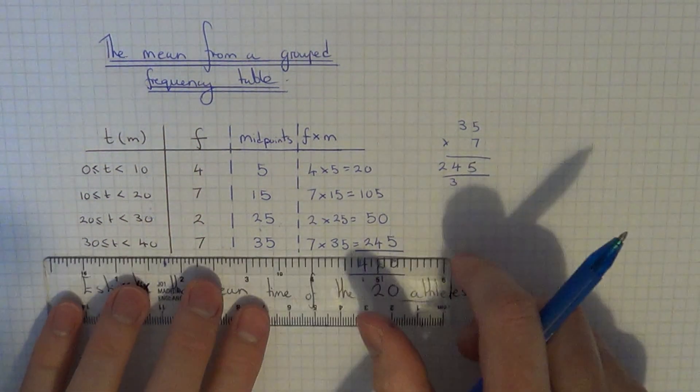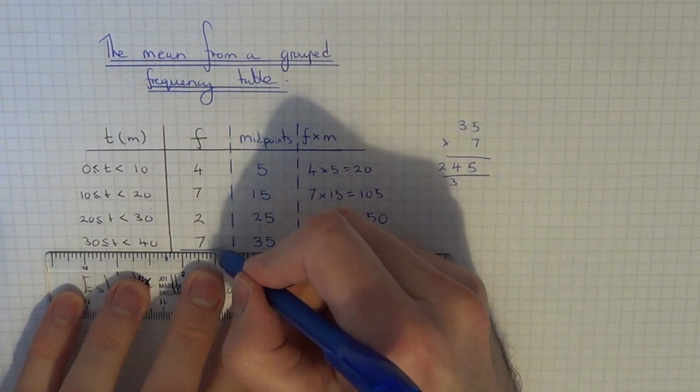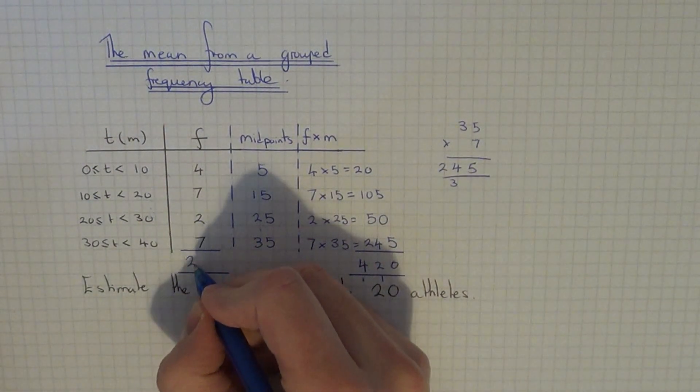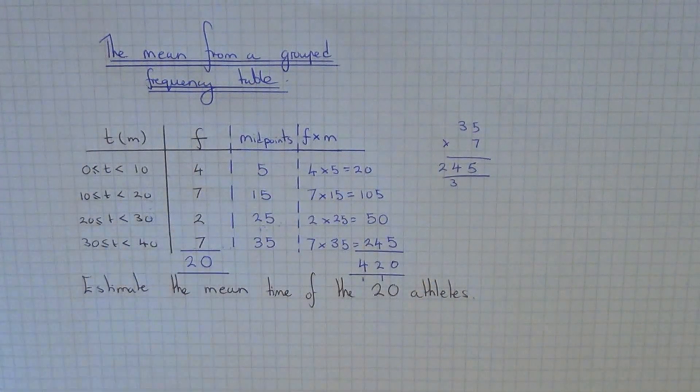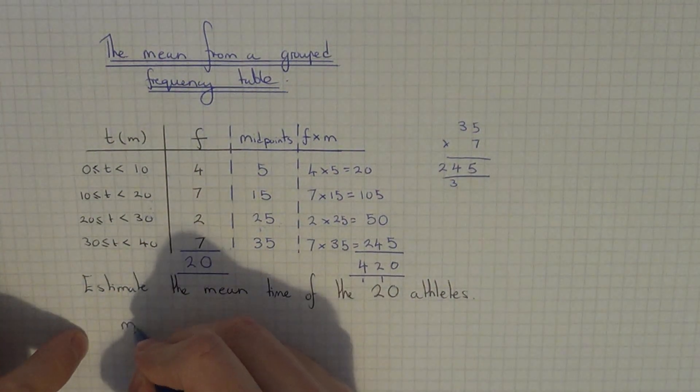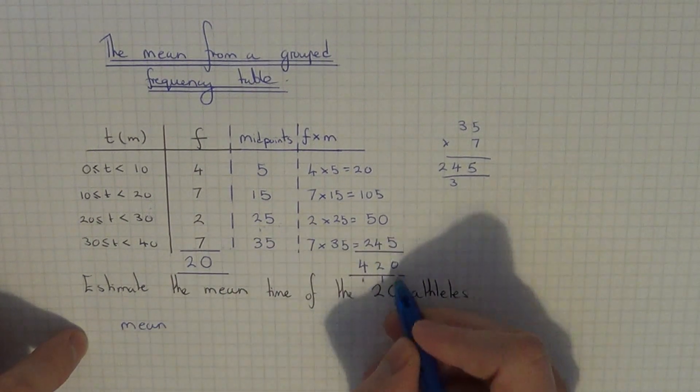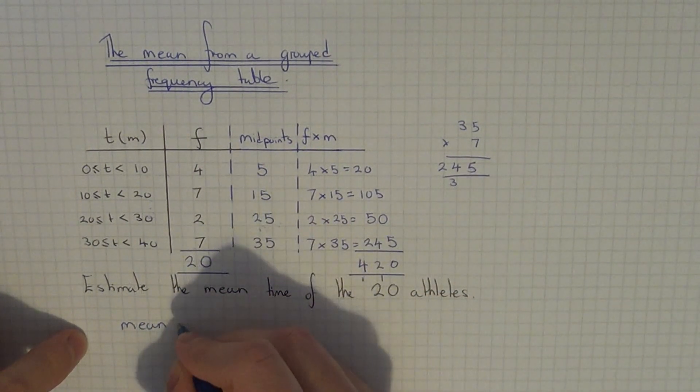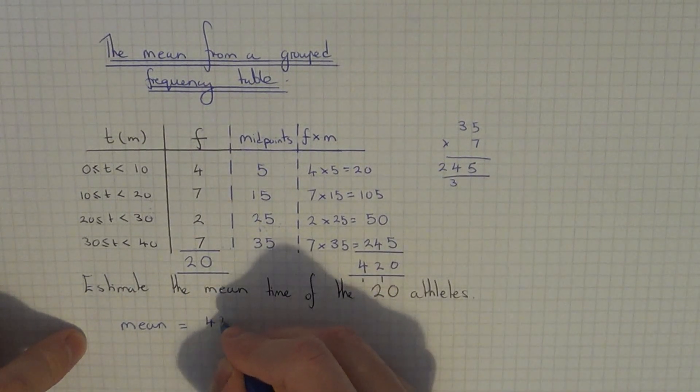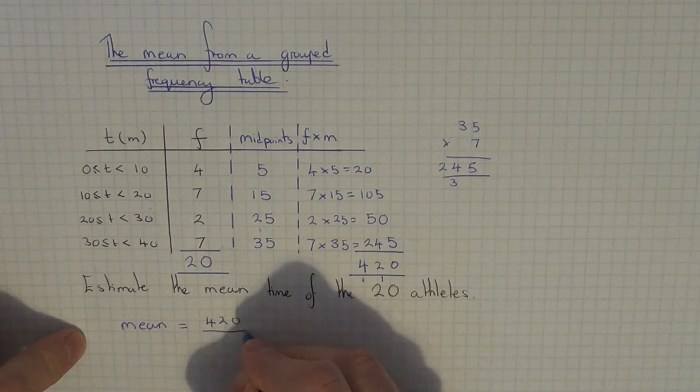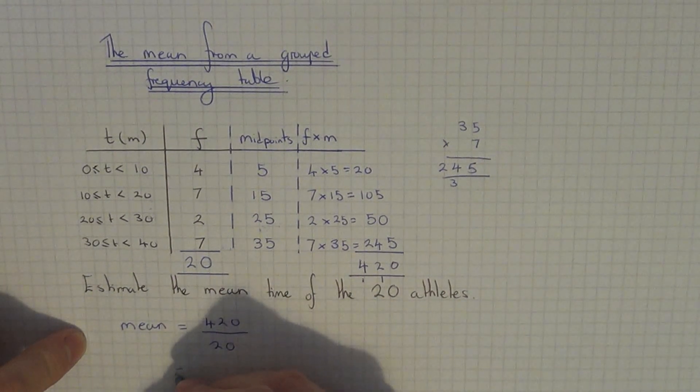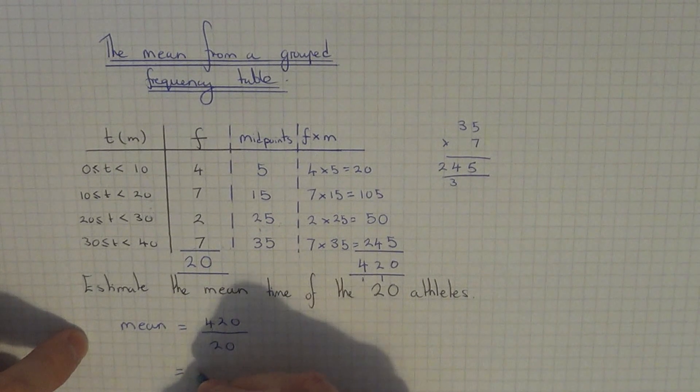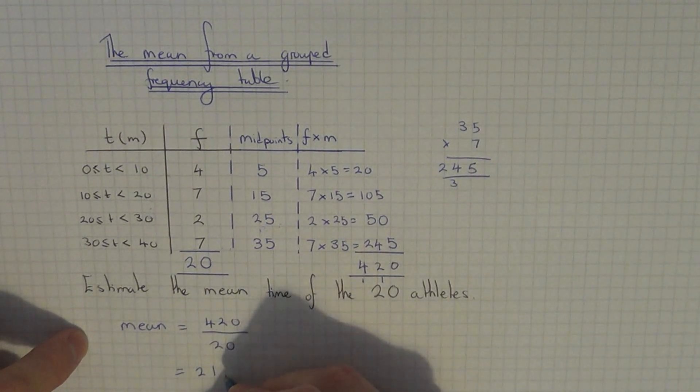And next we've got to add the frequency column which we do know in this case, which is 20. So to work out the mean, all you need to do is the total of this column divided by the total of this column. So we do 420 divided by 20, and this will give us an answer of 21 minutes.